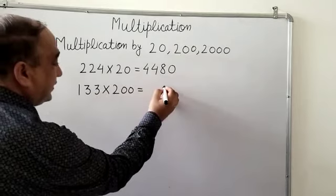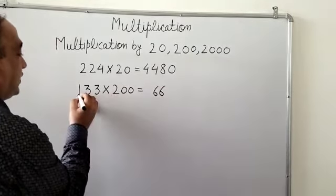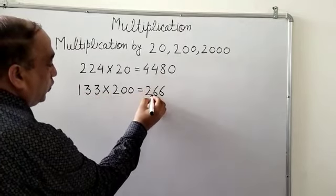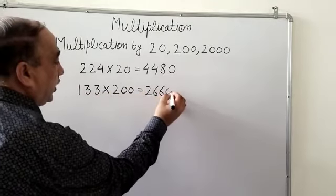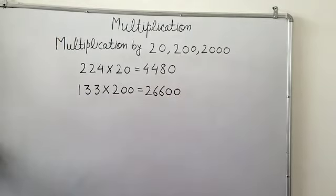2 threes are 6, 2 threes are 6, 2 ones are 2, and we will put two 0s in our answer and the answer will become 26600.